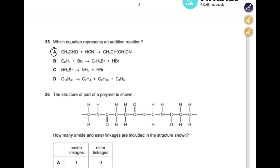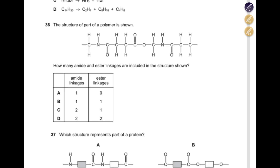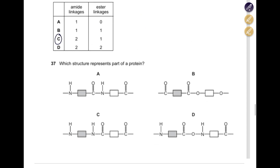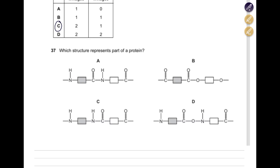The structure of part of a polymer is shown. How many amide and ester linkages are included? Amide linkage is C=O and N–H — we have one amide linkage and another amide linkage, so two amide linkages total. For ester linkage it is C=O and O — we only have one ester linkage. The answer for question 36 is C.